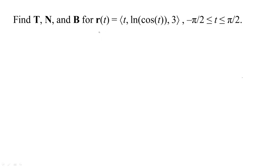Let's look at another example of calculating T, N, and B. We can calculate T as r prime of t over the length of r prime — the velocity divided by the speed.